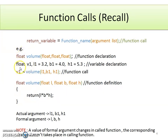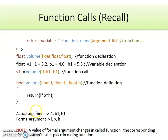After making a function call, it moves to the function definition, where a statement returns the calculated volume, which is collected in v1. Actual arguments are those declared in the main function — in this example they are l1, b1, and h1. Formal arguments are the variables declared in the function definition — they are l, b, and h respectively. A value of a formal argument that changes in the called function does not cause corresponding changes in the calling function.